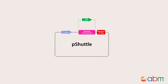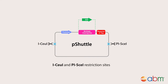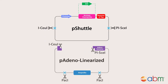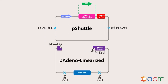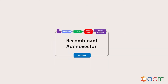The expression cassette in P-shuttle is flanked by ICEU1 and PISCE1 restriction sites, which are special homing endonucleases that are unique sites within the large P-adenoviruses. Next, use the ICEU1 and PISCE1 sites to subclone your gene of interest, tag, or reporter from the shuttle vector into the P-adenoviruses, which contains the adenovirus genome required for virus production.